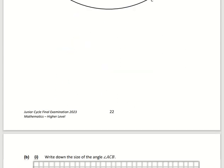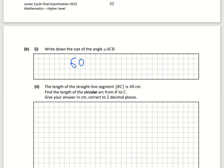Therefore we're going to use the formula theta over 360 times 2 pi r. Therefore the angle at the center is 60 over 360 times 2 times pi times the radius, which is 40.